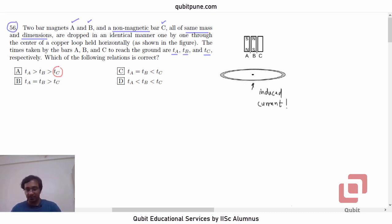If we want to write the answer in a systematic manner, we shall say point 1: As all three bars have same mass, gravity acts equally on them. And they are being dropped from the same height.